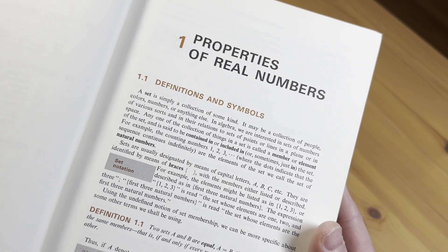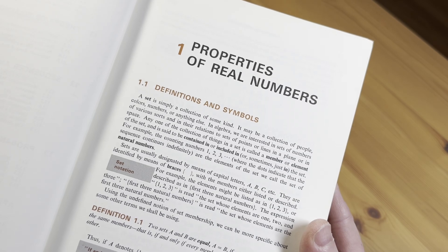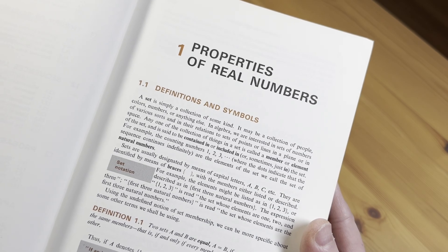So here's how the book starts. A set is simply a collection of some kind. It may be a collection of people, colors, numbers, or anything else.